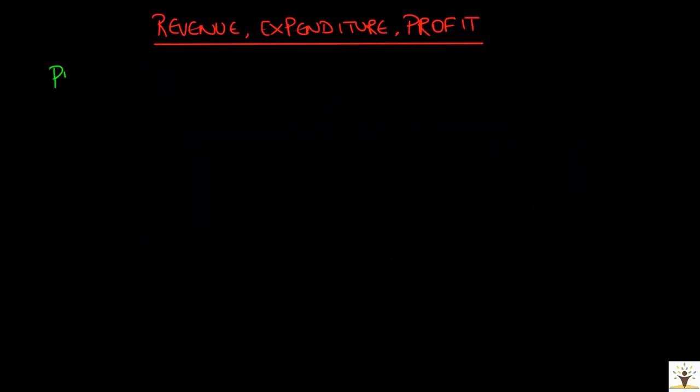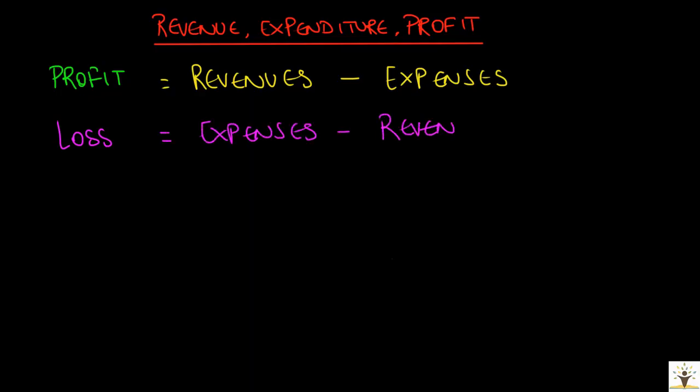The next term is profit. Every business is set up and run with a motive to earn profit or increase its profit. So profit is the excess of revenue earned over expenses incurred by the business. In other words, profit equals to revenue minus expenses. If the expenses of the business are more than the revenue, then the difference is termed as a loss.